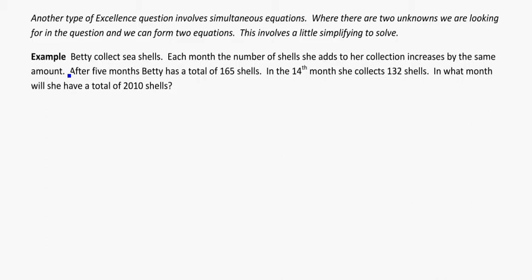Betty collects seashells. Each month, the number of shells she adds to her collection increases by the same amount. That right there is my hint that this is going to be an arithmetic sequence. After five months, Betty has a total of 165 shells. That's a hint that I'm dealing with a sum. So after five months, her sum is going to be 165.